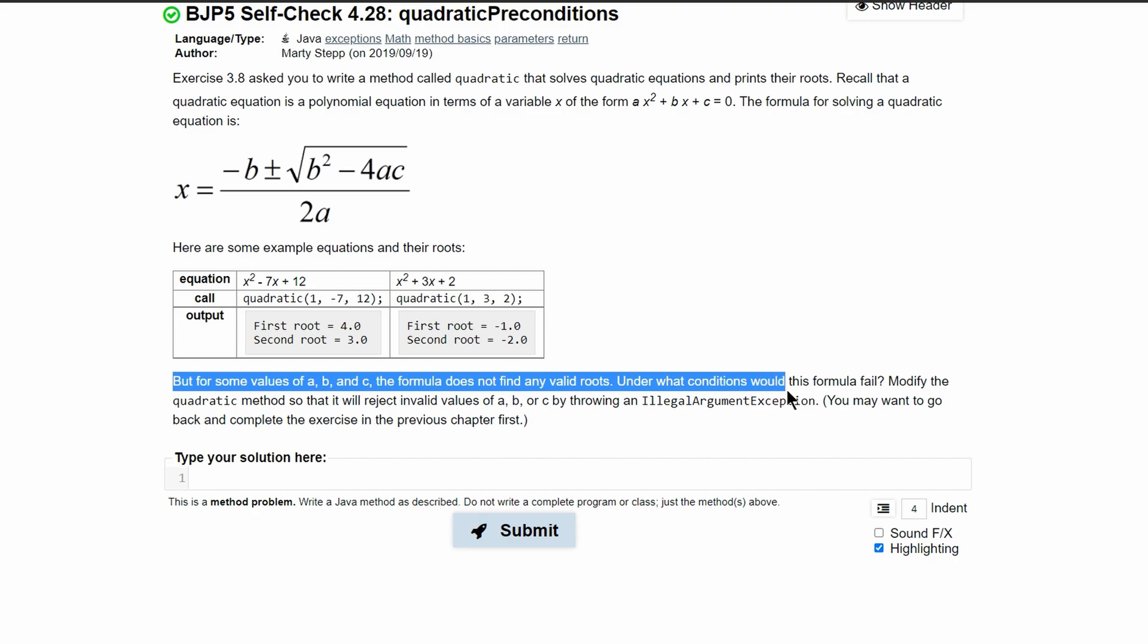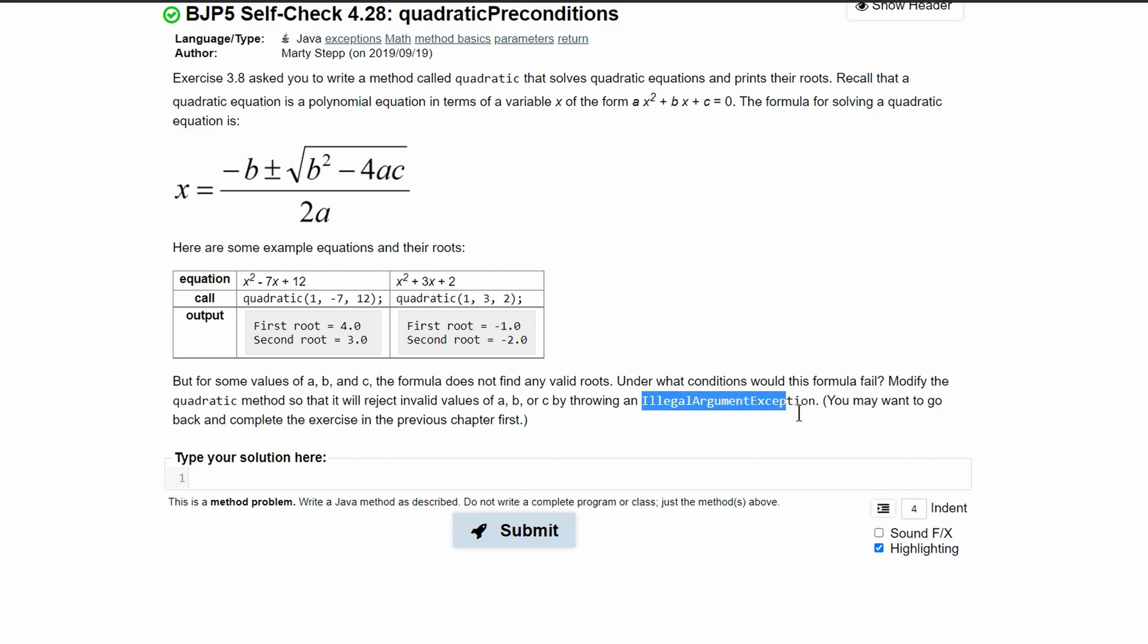Under what conditions would this formula fail? We need to modify our quadratic method so it will reject invalid values of A, B, or C by throwing a new illegal argument exception.